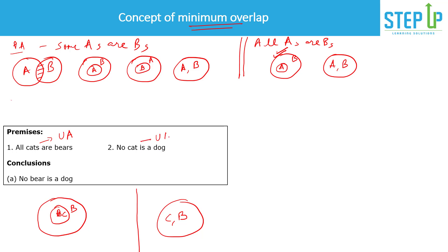When drawing conclusions there are three terms, meaning there is a common term and we must merge the diagrams. We put the dog diagram onto each of the two cat-bear diagrams. 'No cat is a dog' means cat and dog are disjoint circles. In the minimum overlap condition the dog circle is placed just outside the cat circle, but there are also other valid placements where dog partially overlaps with bear.